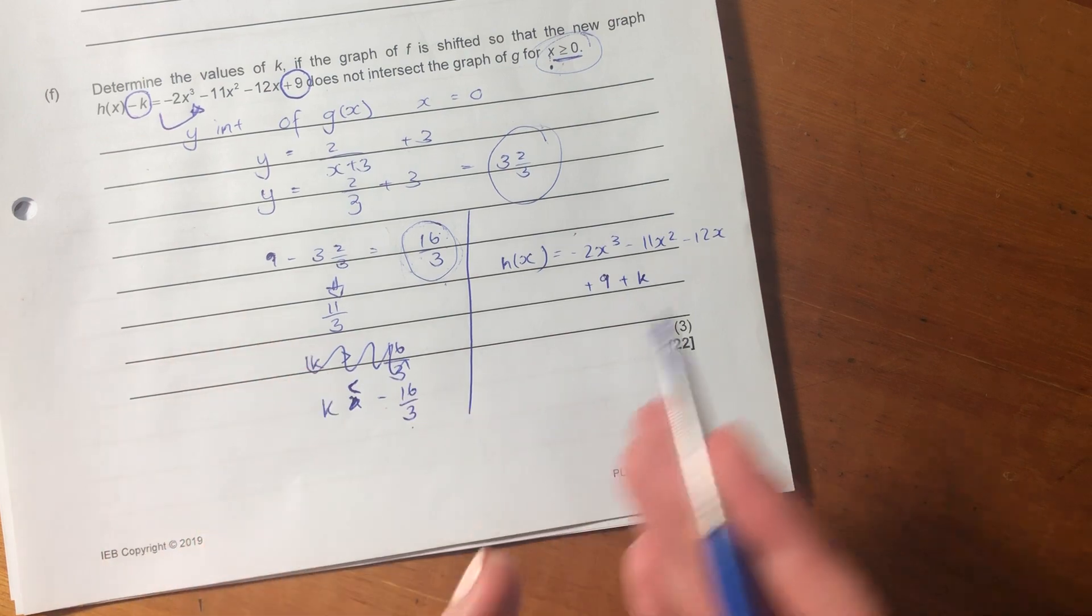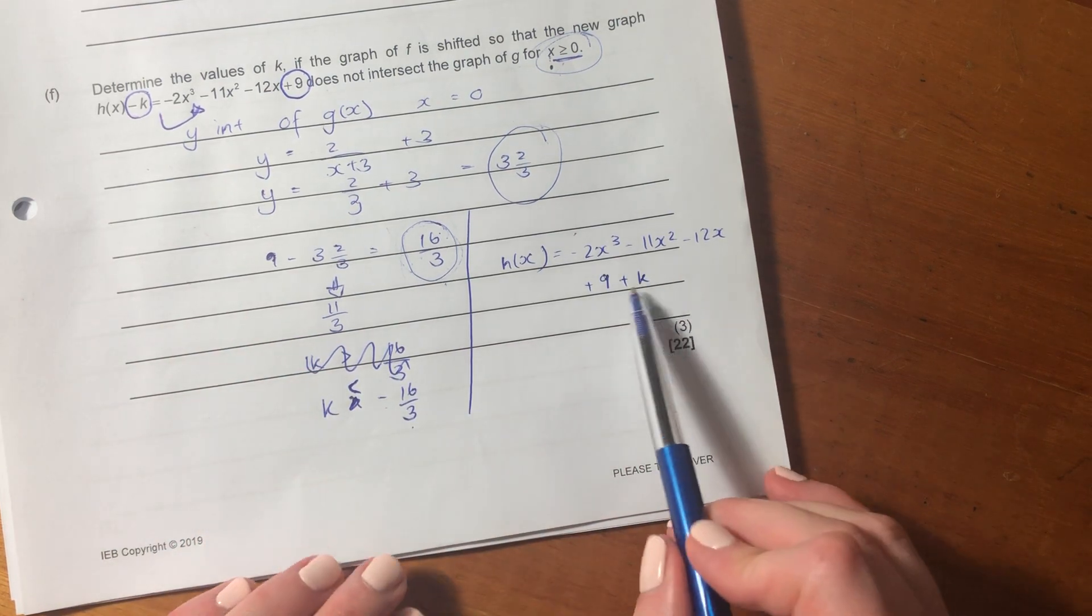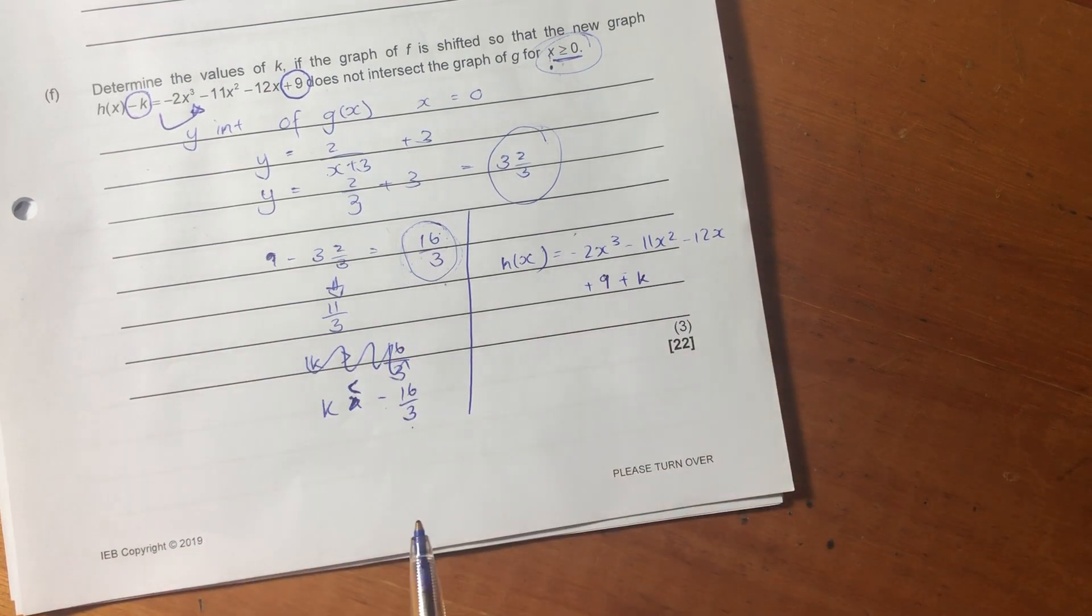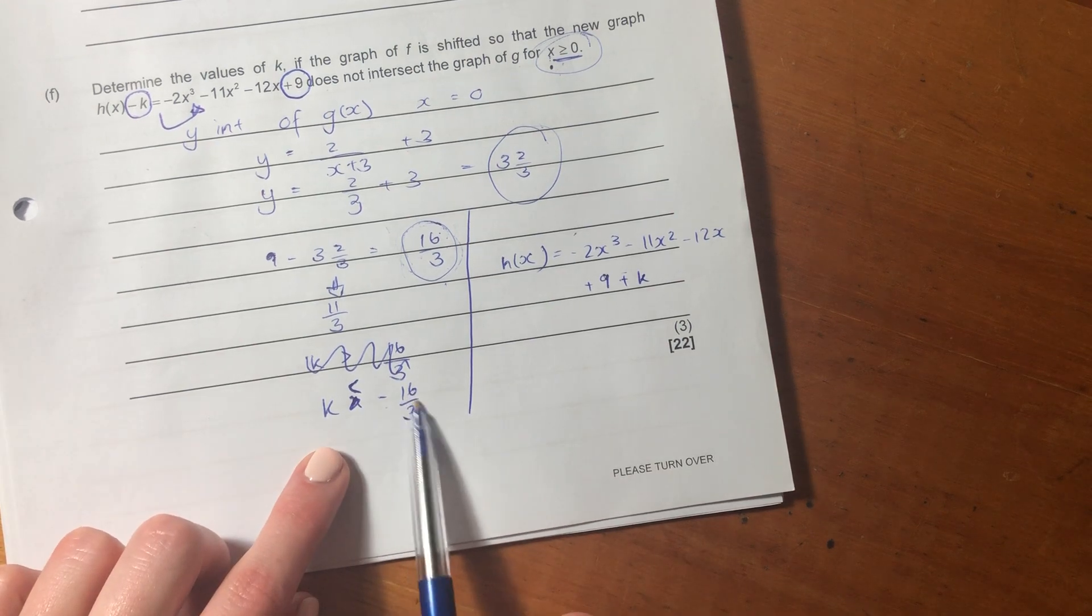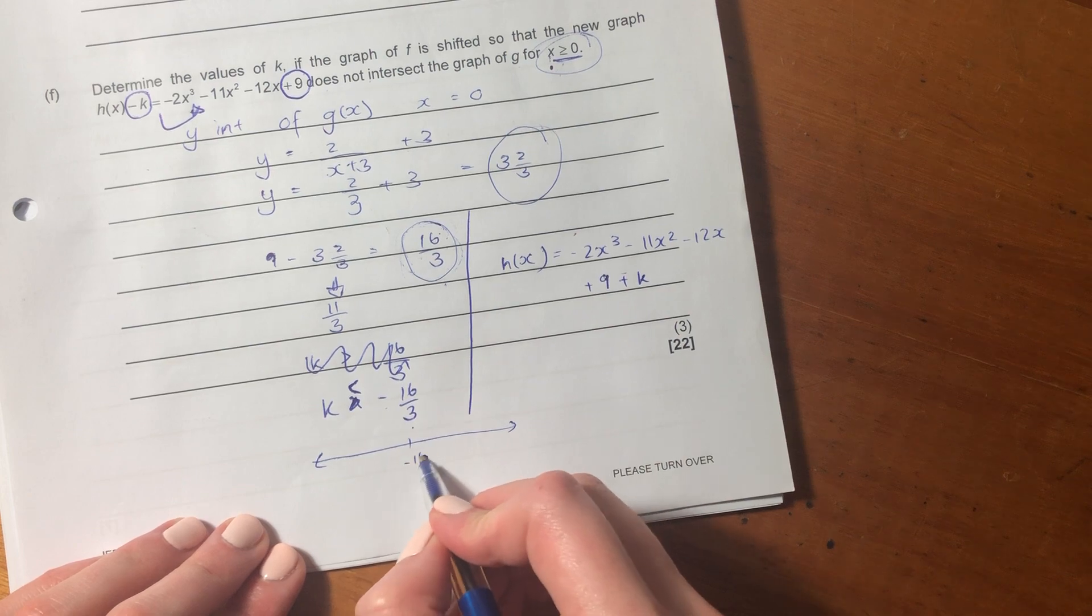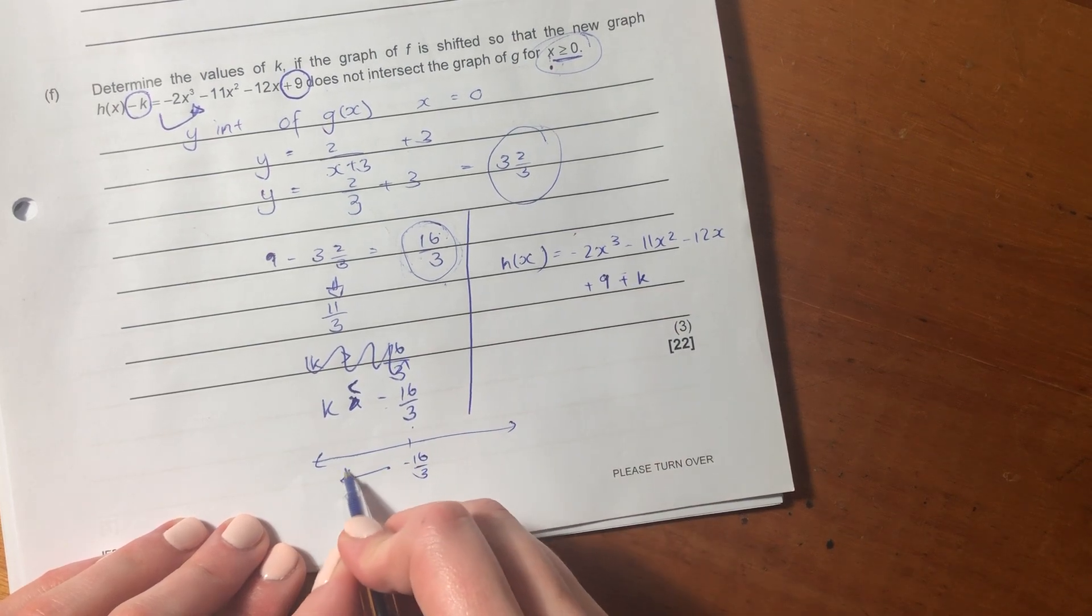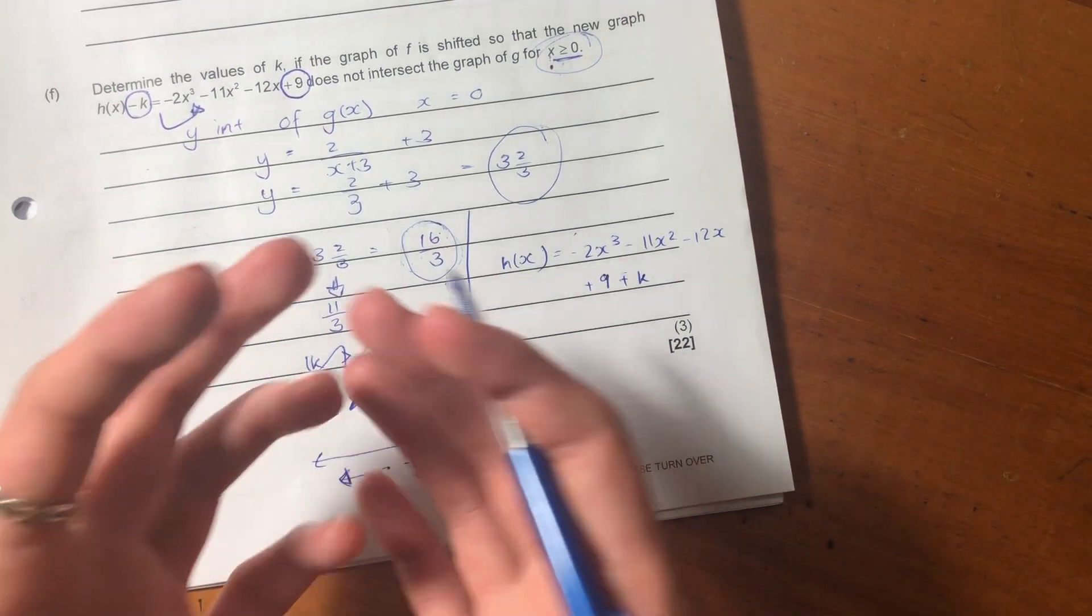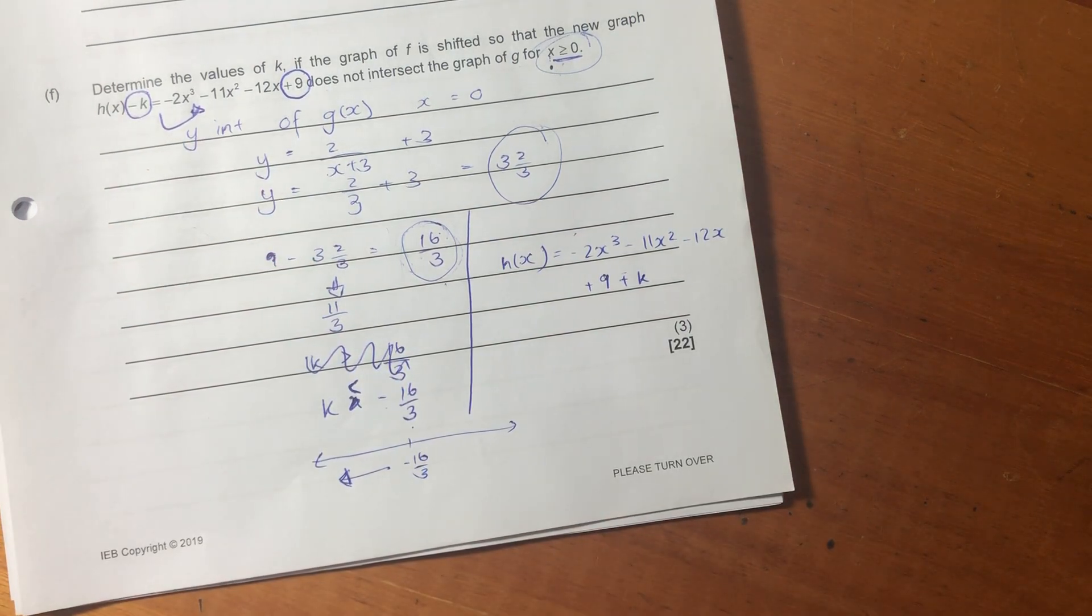So the answer here is K has to be less than negative 16 over 3. So we're saying at negative 16 over 3, that's where those two intercepts would coincide, but they cannot coincide. But if you take a number that is less than negative 16 over 3, which is basically a bigger subtraction from the 9, then that's fine. So that is your final answer there.